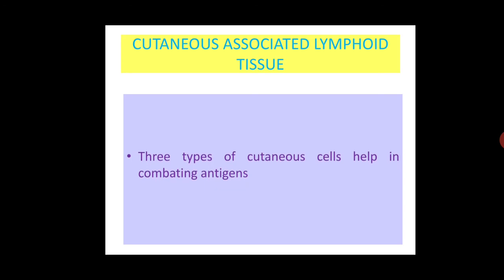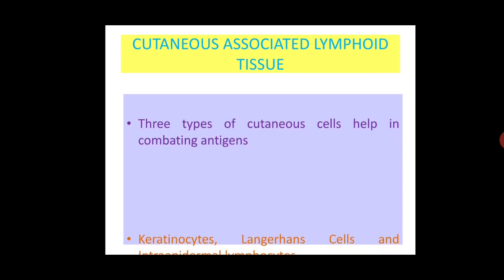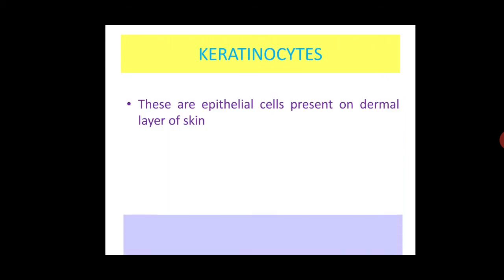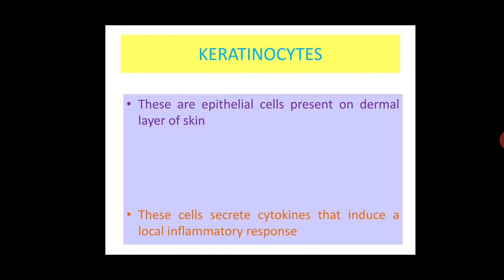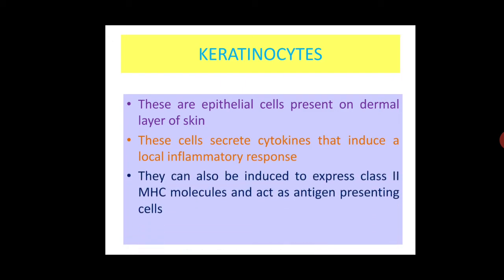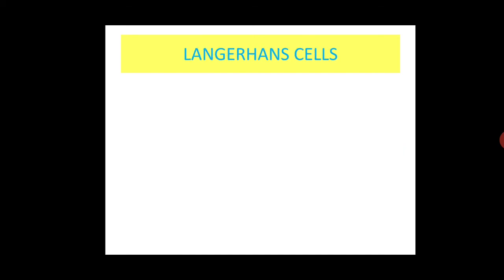Now we discuss cutaneous-associated lymphoid tissues. There are three types of cells in the skin: keratinocytes, Langerhans cells, and intraepidermal lymphocytes. Keratinocytes are epithelial cells present in the dermal layer of skin that secrete cytokines to induce a local inflammatory response.